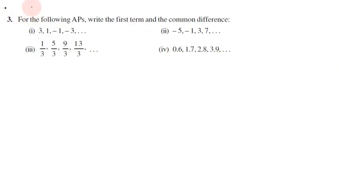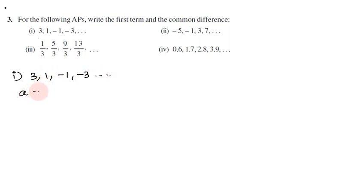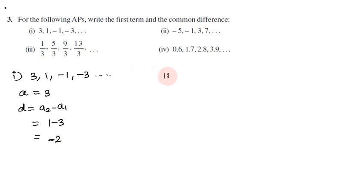Exercise 5.1, Problem 3: Write the first term and common difference for the following sequences. First subdivision: 3, 1, -1, -3. First term a = 3. Common difference = a2 minus a1 = 1 minus 3 = -2.